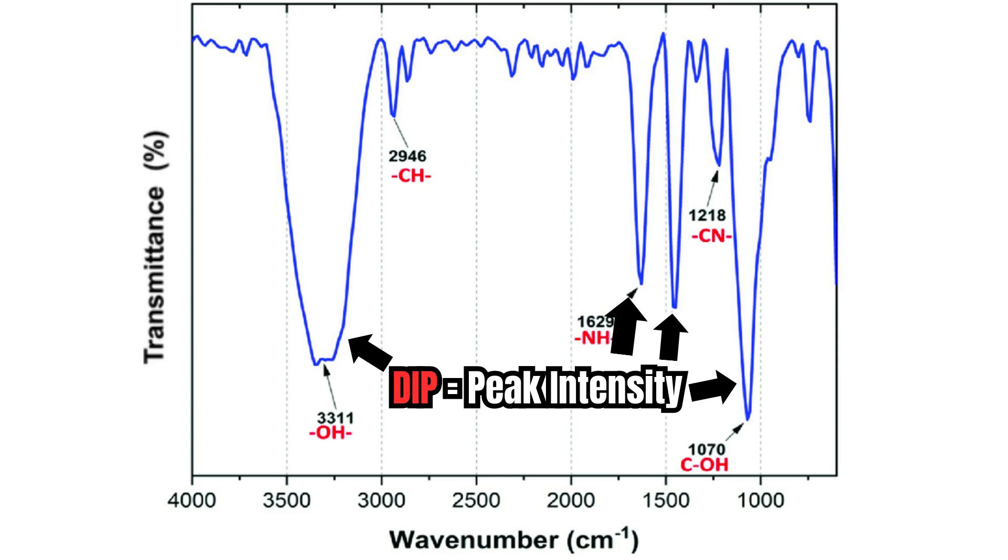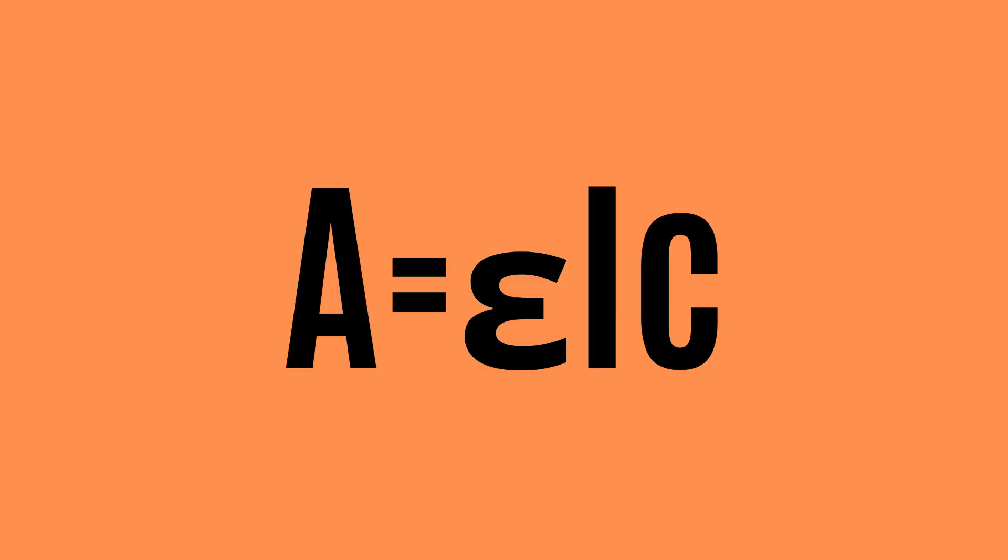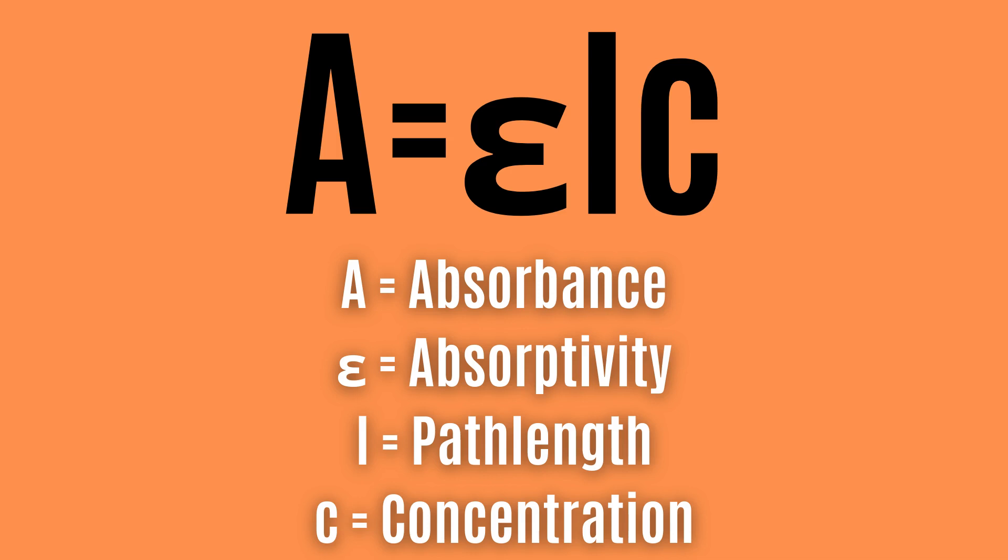The depth of the dip or peak intensity, as it is also called, is dependent on Beer's law which states that the absorbance equals absorptivity times the path length of the light and the concentration of the sample in question.